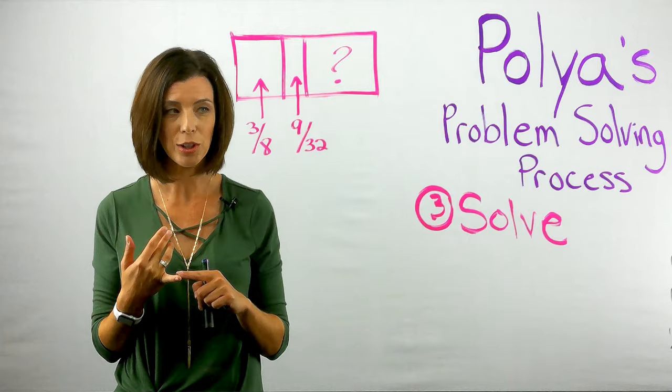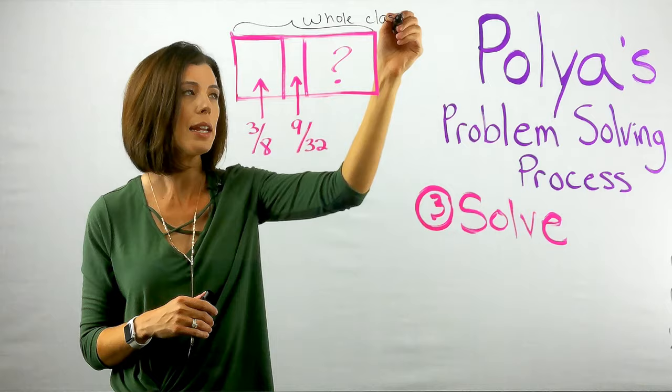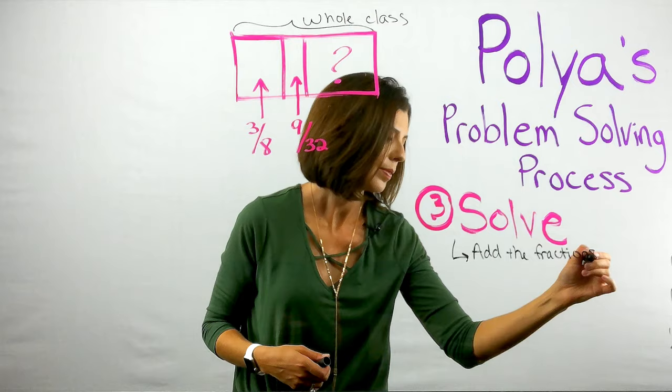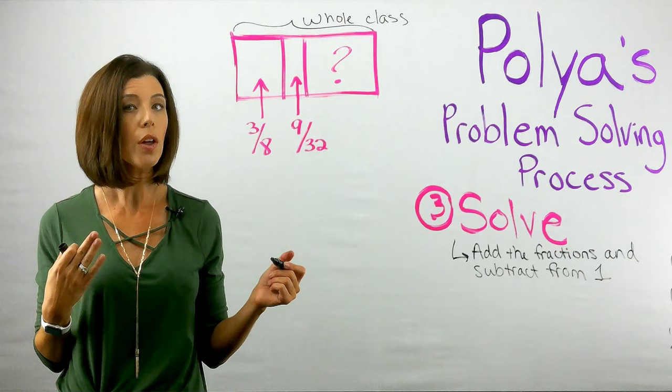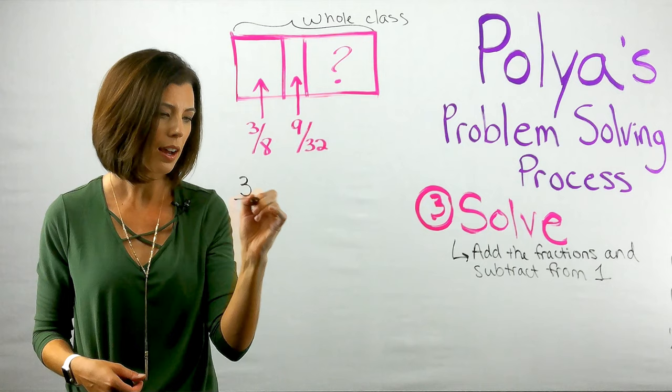So I know that my whole here, this is my whole class, in this case can be represented by a one. So I have two options here and this is where I'm thinking about my options to solve. I could add the fractions first and subtract from one, or I could start with the whole class and subtract each part. I'm going to go ahead and do the first one.